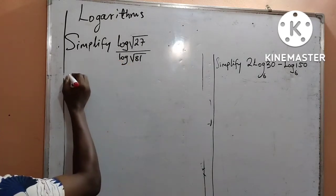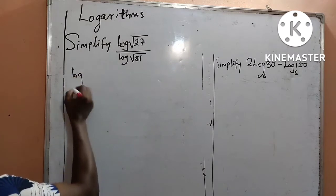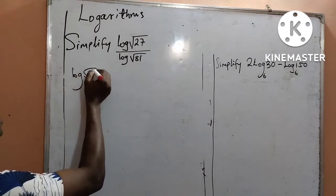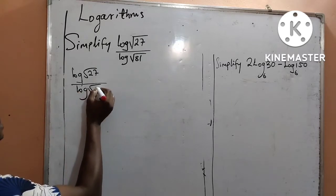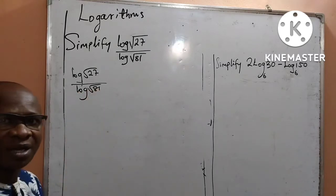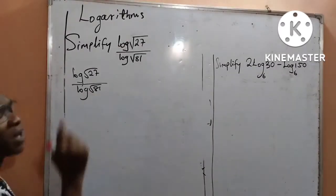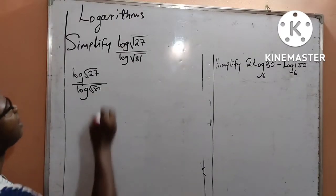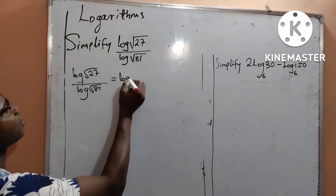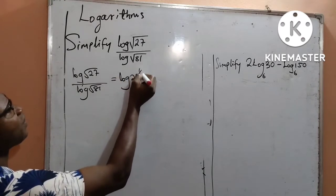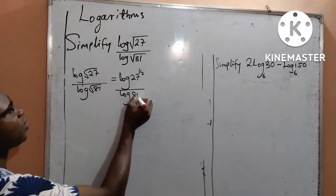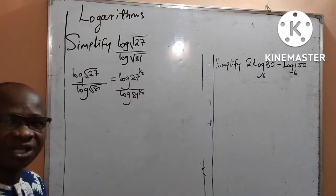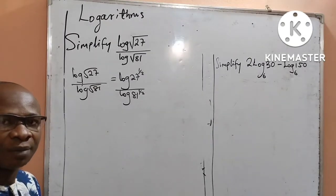To start with, I am given log square root of 27 divided by log square root of 81. I want to express the square root as a power, and that will now be log 27 raised to power half, all over log 81 raised to power half. I have now changed the square root to become power 1 over 2.